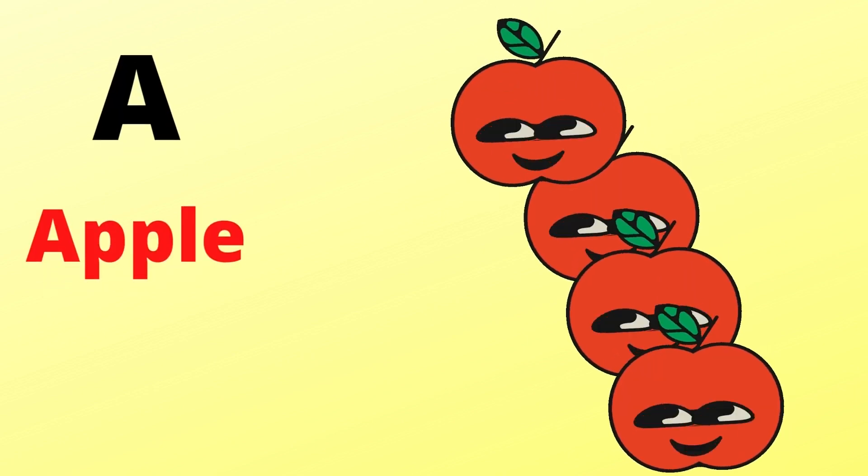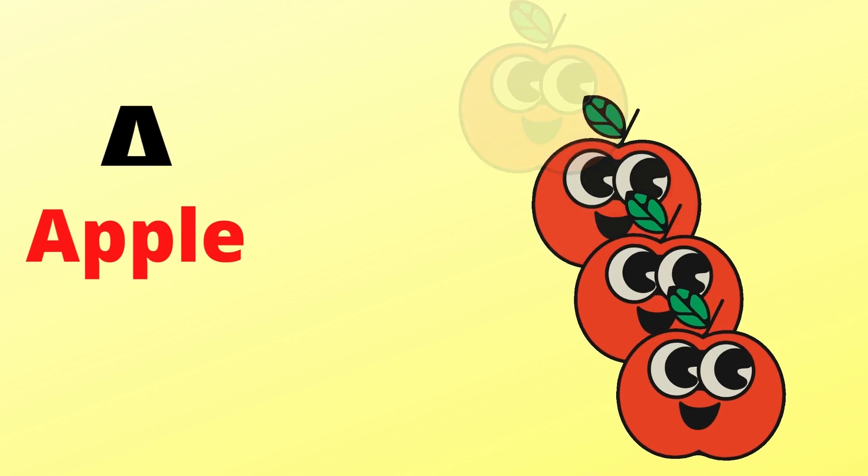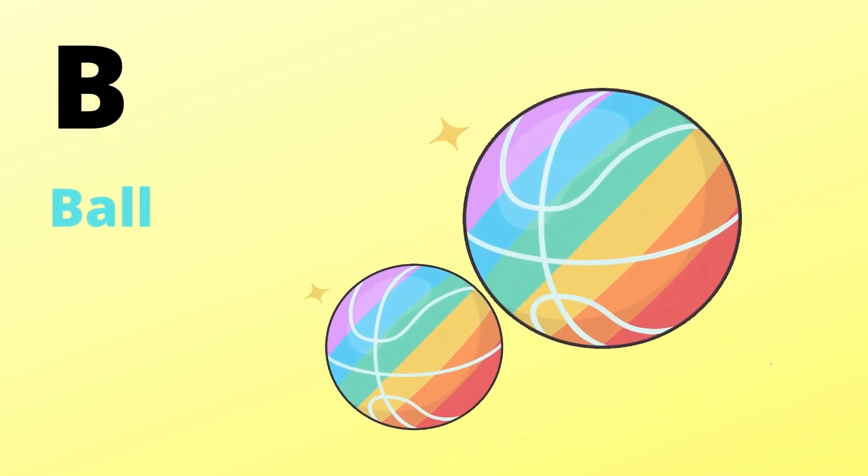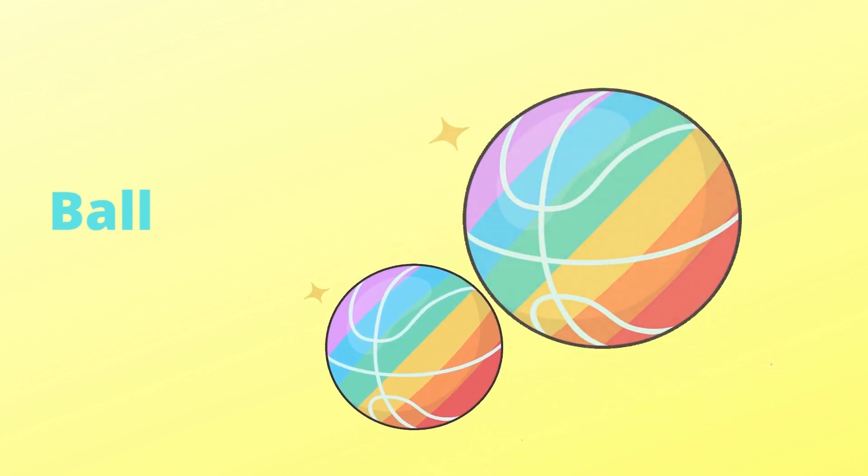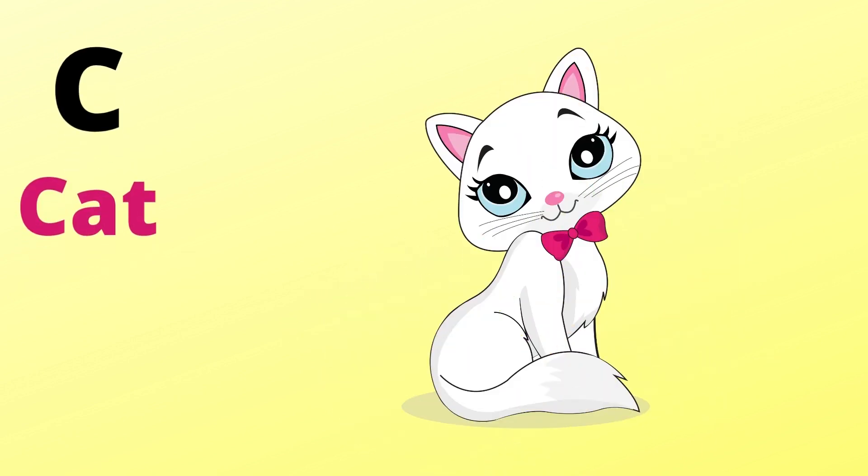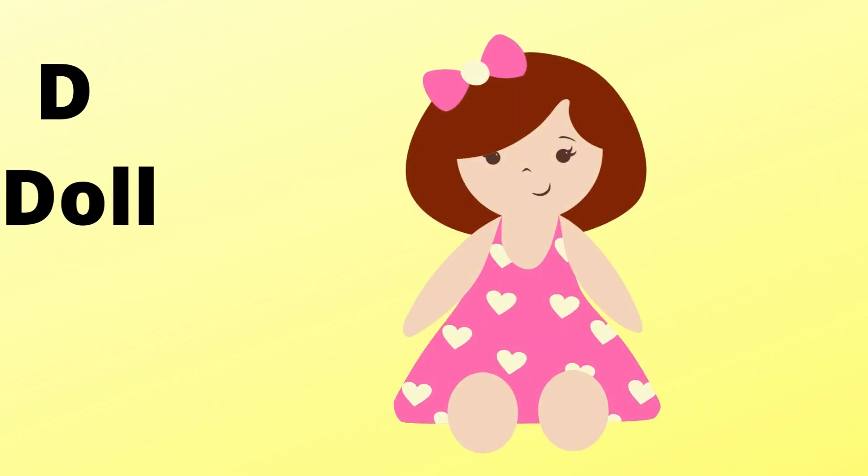A is for apple, a-a-apple. B is for ball, b-b-ball. C is for cat, c-c-cat. D is for doll, d-d-doll.